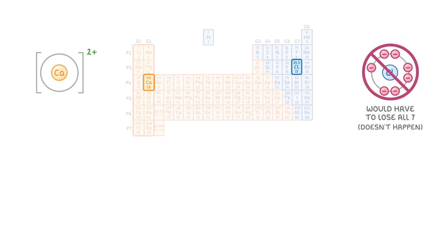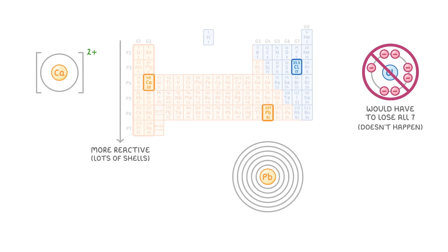Another feature of metals is that they tend to become more reactive towards the bottom of the table. This is because elements far down the table have lots of shells. For example, lead, which is Pb here on the table, has 6 shells, so its outermost shell is really far from the nucleus.